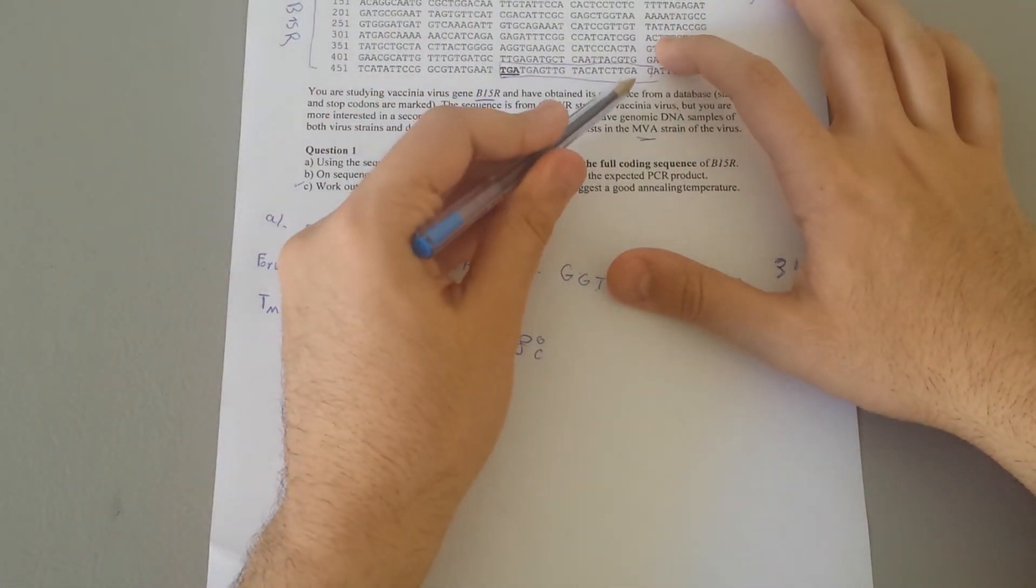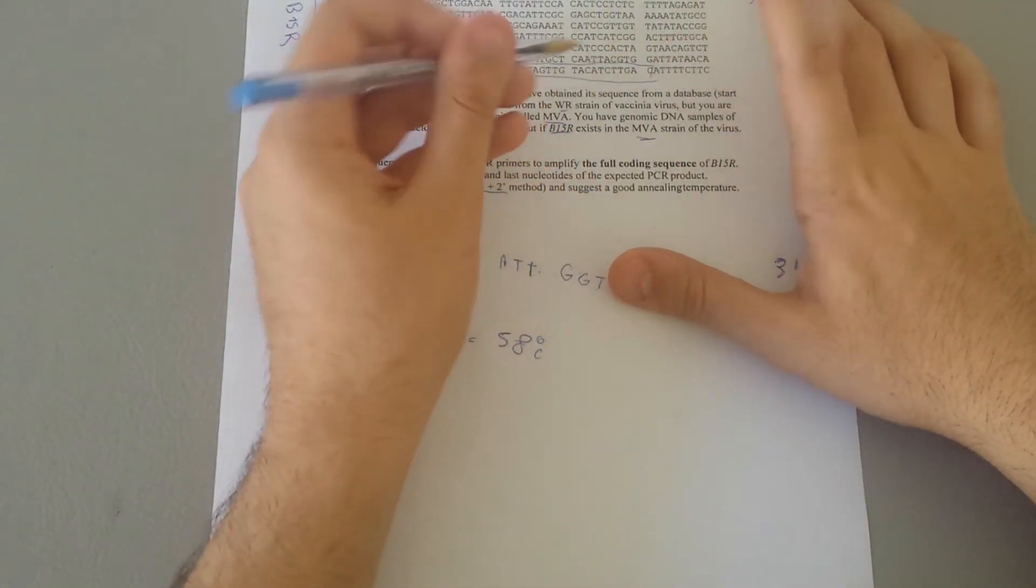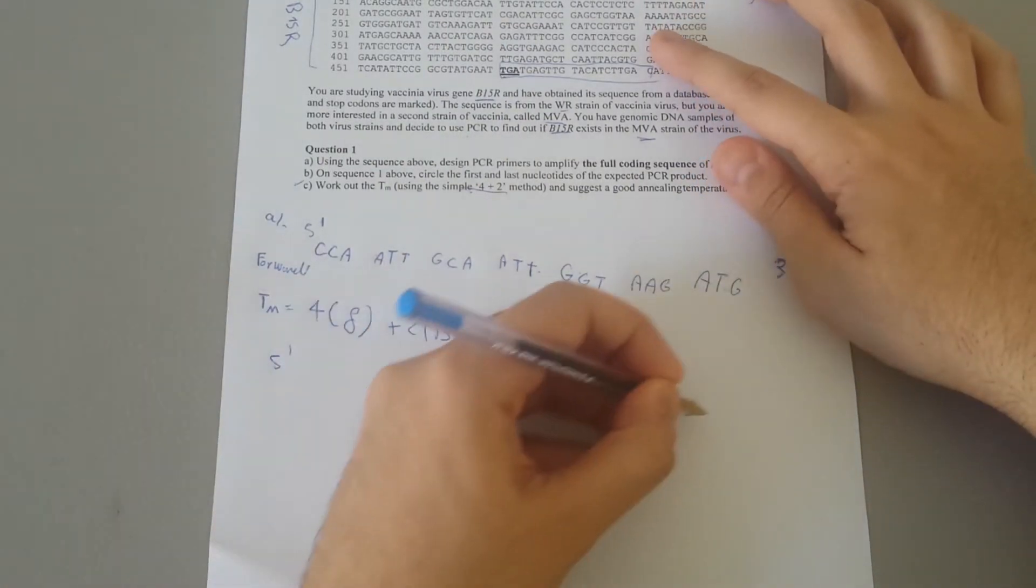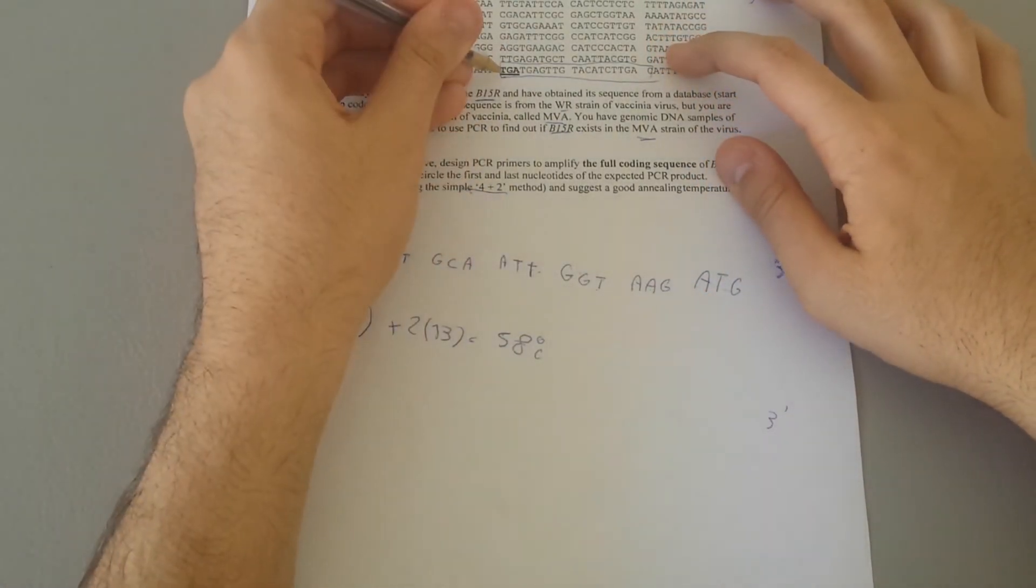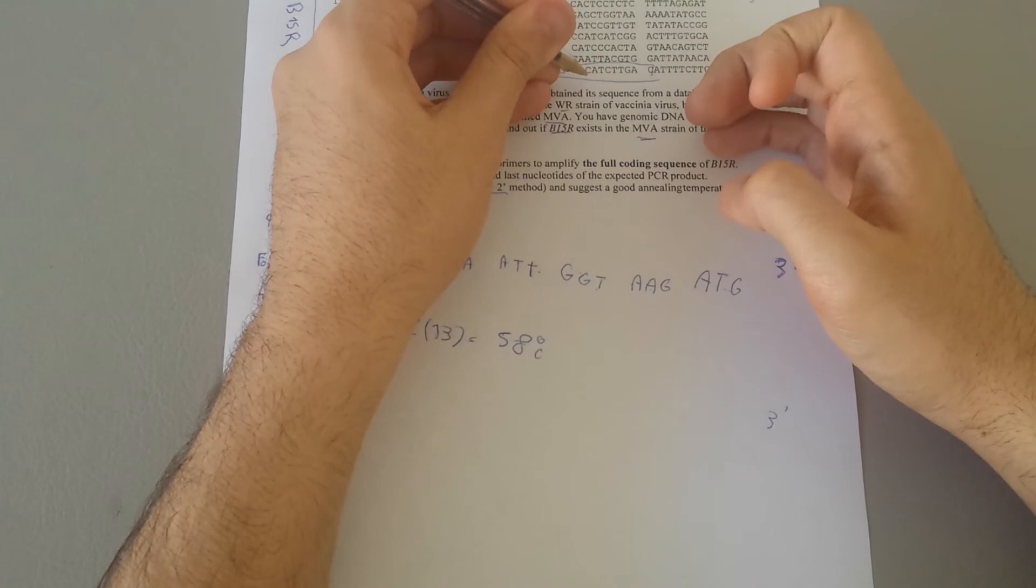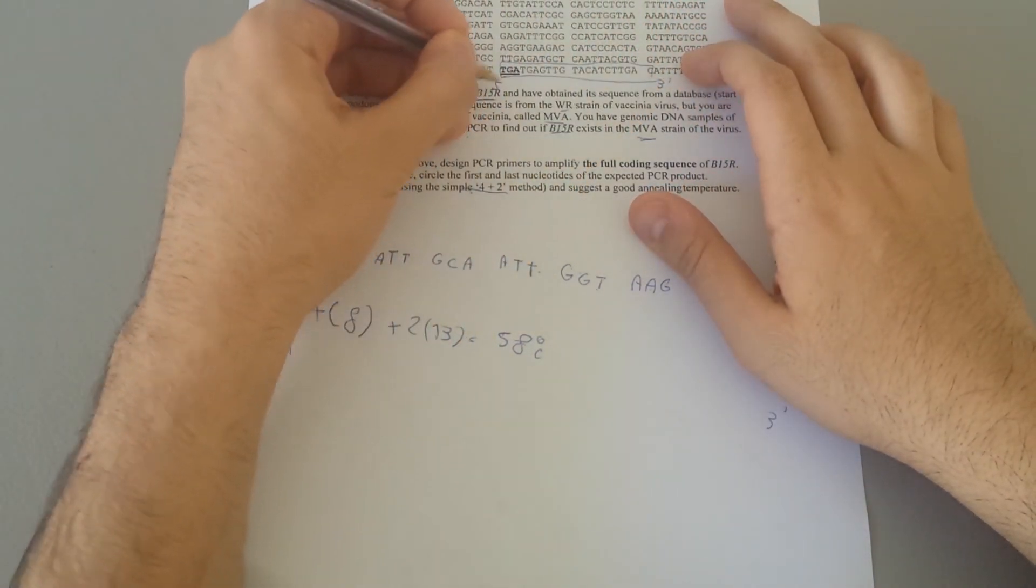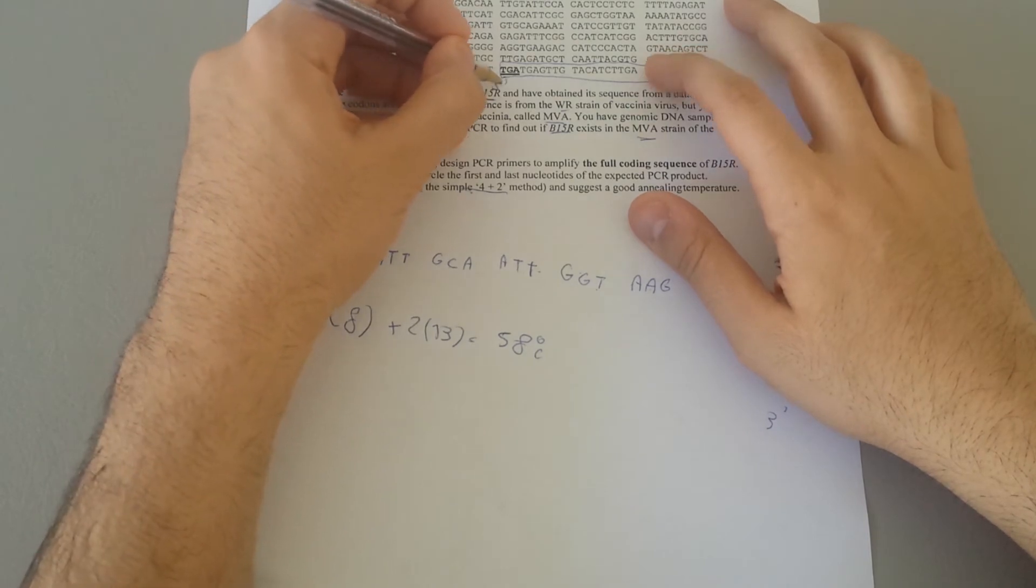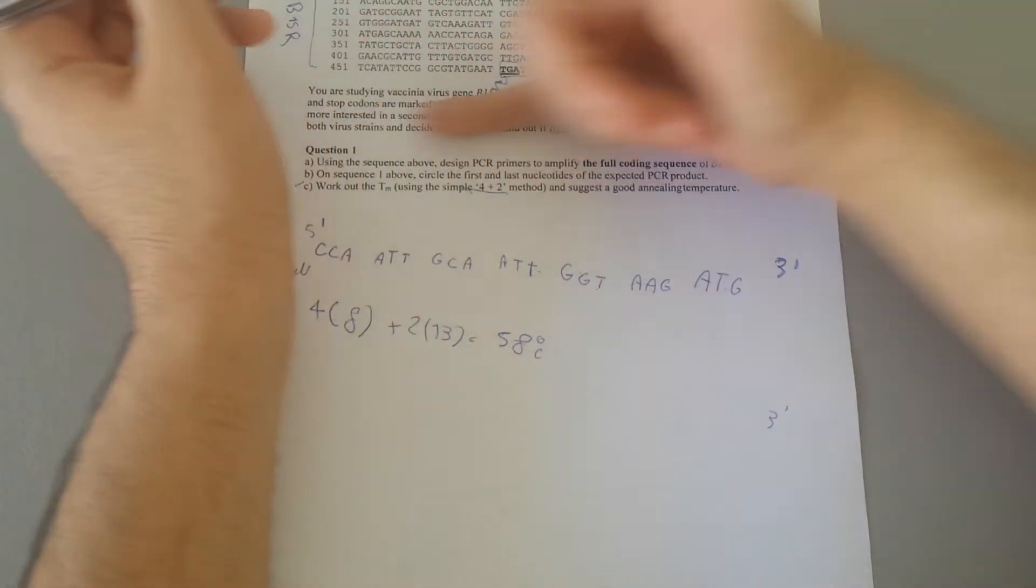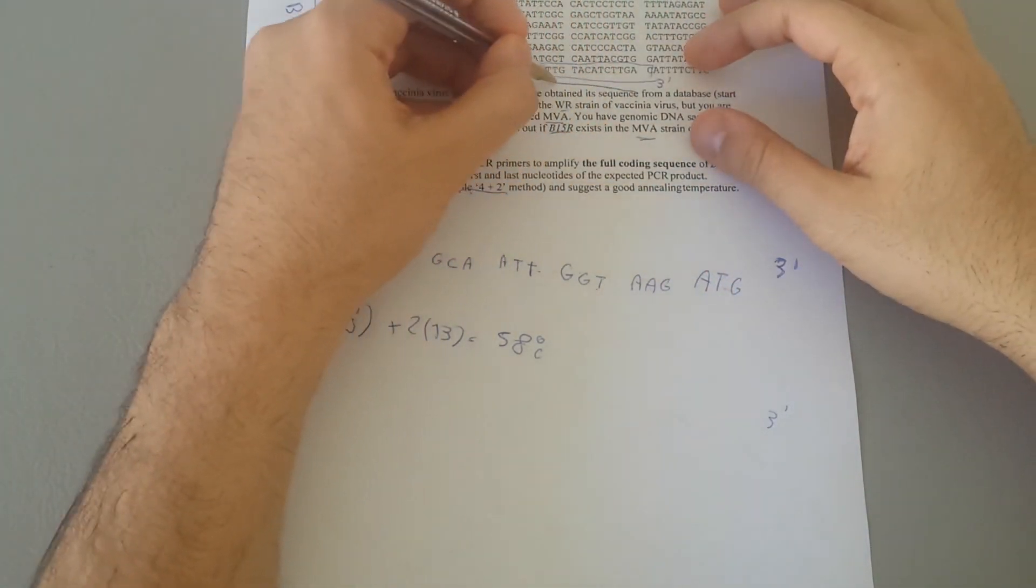Now let's do the reverse primer. Recall the reverse primer must be written in 5 prime to 3 prime, but we know it is reading this way. If you want to make it 5 prime to 3 prime, because this is 5 prime, you have to make it reverse complementary because we want to get it in this direction.